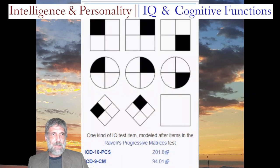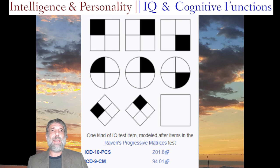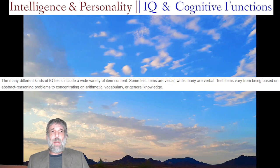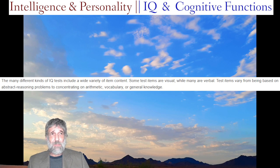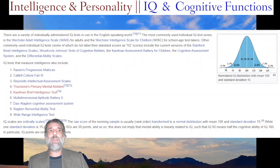This is the kind of test question I've encountered plenty of times on various kinds of reasoning and IQ tests — it shows you a set of patterns and asks you to predict what the next pattern in the sequence is. But that's not the only kind of problem. The many different kinds of IQ tests include a wide variety of item content: some items are visual, while many are verbal, ranging from abstract reasoning to arithmetic, vocabulary, or general knowledge.